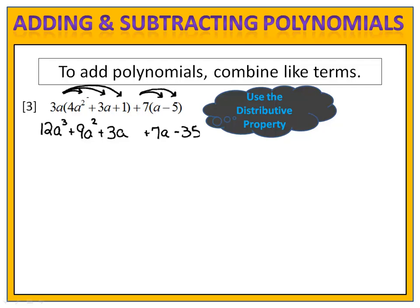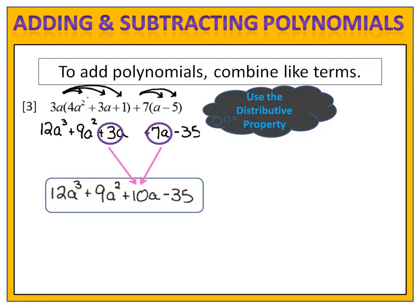We continue along distributing and we end up with 3a times 3a which gives us 9a squared, and 3a times 1 which is 3a. Now we'll go to the second polynomial and distribute the 7, giving us 7a minus 35. Now we can combine like terms. We see that we have 3a and 7a which together add up to 10a. There are no other like terms, so in simplest form these two polynomials add up to 12a to the third plus 9a squared plus 10a minus 35.